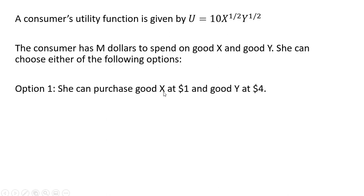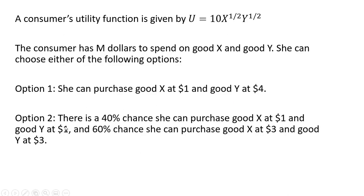Option 1: she can purchase Good X at $1 per unit and Good Y at $4 per unit, or she could choose Option 2. With Option 2, however, there is uncertainty. There is a 40% chance she can purchase Good X at $1 and Good Y at $1, and a 60% chance she can purchase Good X at $3 and Good Y at $3. What option does this consumer prefer?